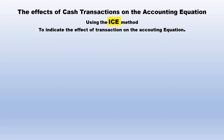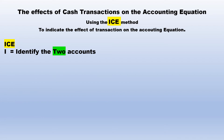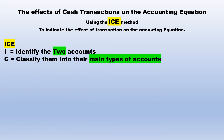We are going to talk about the effect of cash transactions on the accounting equation. We use the ICE method to indicate the effect of transactions on the accounting equation. ICE stands for: I — identify the two accounts involved in the transaction; C — classify the accounts into their main types of accounts or elements of accounts.